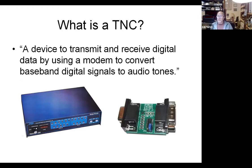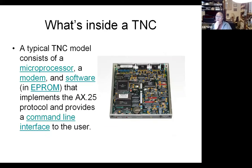So we'll start out — what's a TNC? In its simplest form, it's just a device that lays in between the radio and a terminal. It does all the job of converting digital data to audio tone so that it can be sent over the air, and going the opposite direction, converting audio tones back to digital data for a terminal to use. What you have inside the TNC is some hardware — a microprocessor, a modem, and software that controls how it works and implements the protocols.